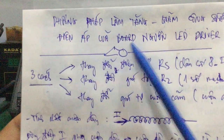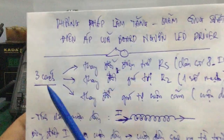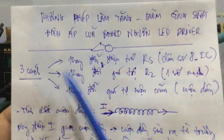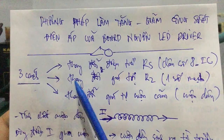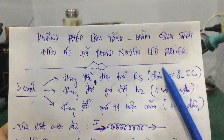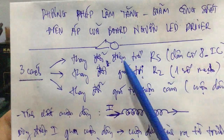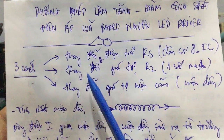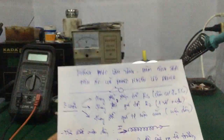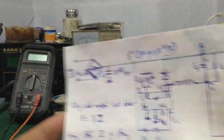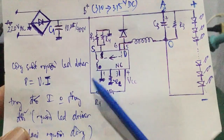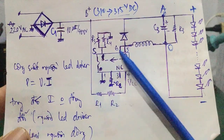Đây là cách mà mình đã từng thực hiện. Mình đã giới thiệu cho các bạn 2 cách trước: cách thứ nhất là thay đổi giá trị điện trở RS trên chân số 8 của IC nguồn LED driver, cách thứ 2 là thay đổi giá trị R2. Trong những video trước mình đã hướng dẫn và làm thực tế, một số bạn đã làm và thực hiện thành công.